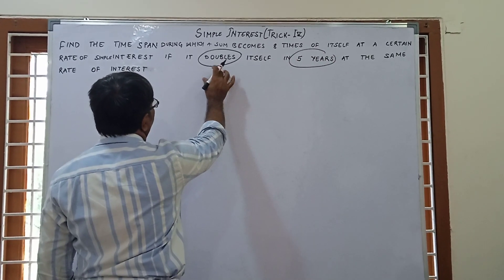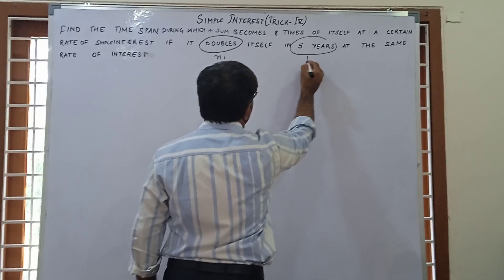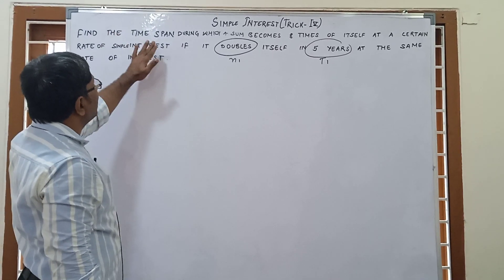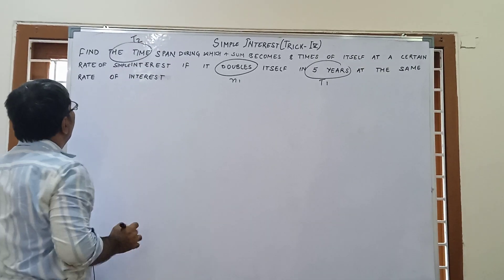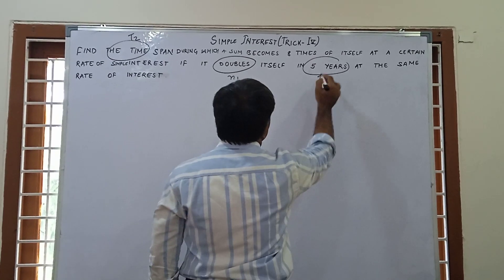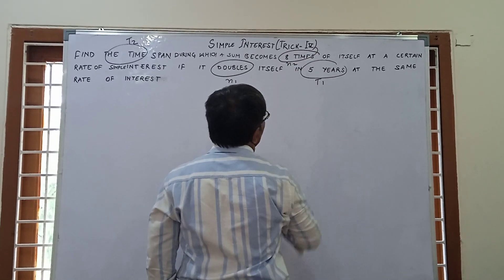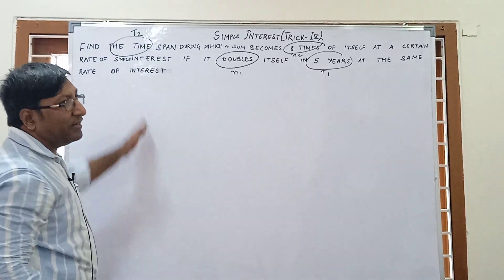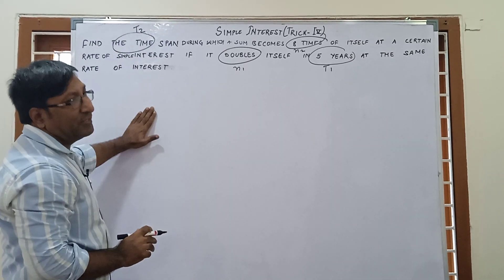In this type of question, we have to see what is given. In the first case, it doubles itself in 5 years. That means suppose this is given N times of itself. So this is N1 and this is time T1, and we have to find time T2.